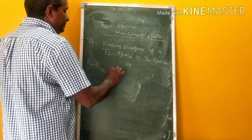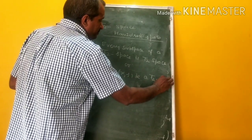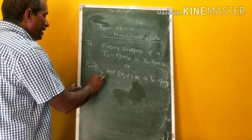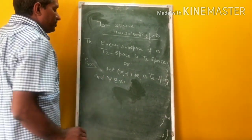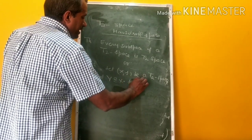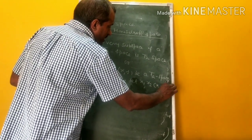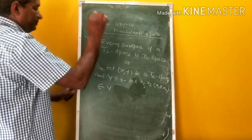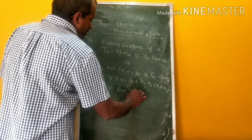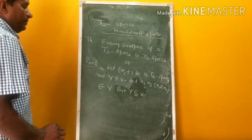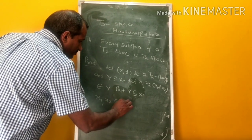Let X, T be a T2 space and Y be a subspace of X. Now we show Y is a T2 space. Let x1, x2 with x1 not equal to x2 be two distinct elements of Y. But Y is a subspace of X, so x1 and x2 belong to X.